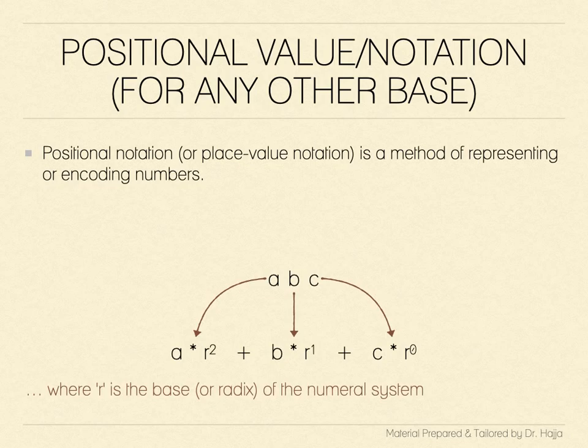In this context, each digit A, B, and C takes on a new meaning based on its position. A is the value of A times the base R raised to the power of 2. B stands for B times the base R raised to the power of 1.